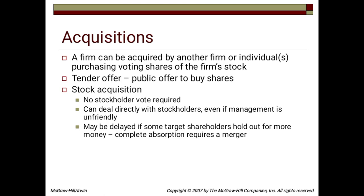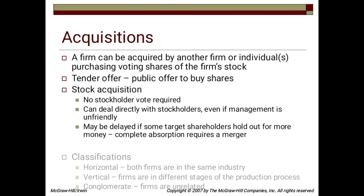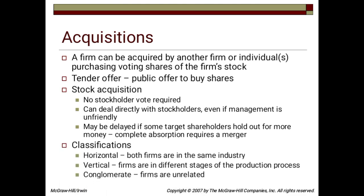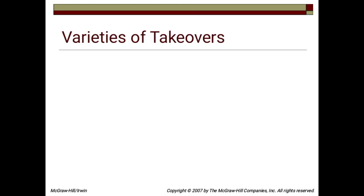Complete absorption requires a merger. Classifications: Horizontal — both firms are in the same industry. Vertical — firms are in different stages of the production process. Conglomerate — firms are unrelated.